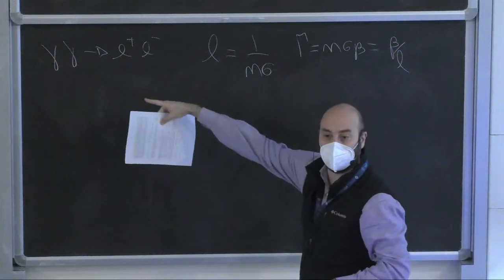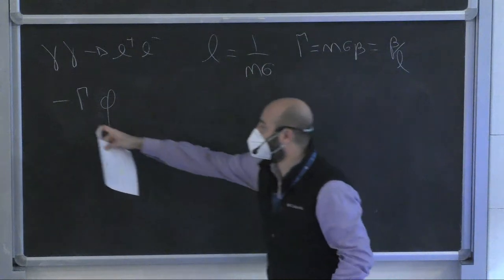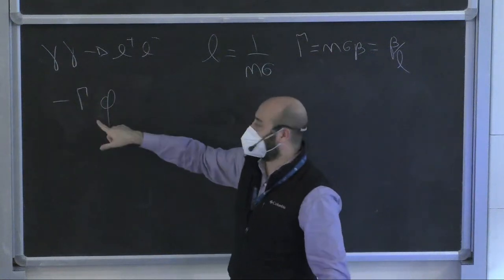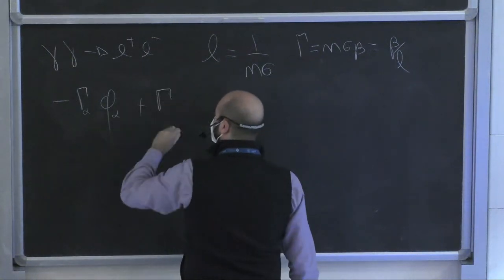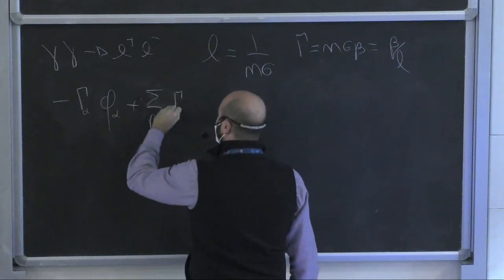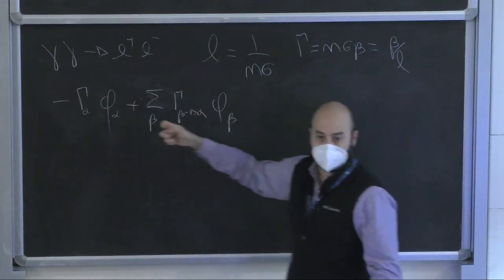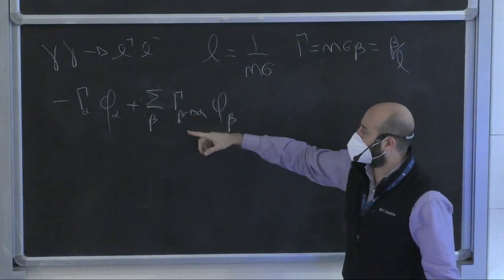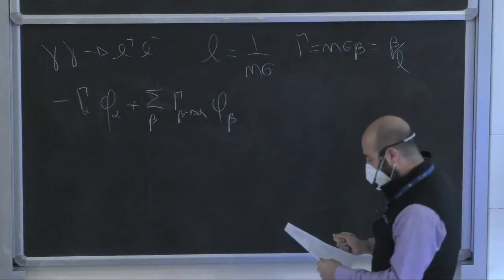For such catastrophic processes, at the right-hand side you introduce minus Gamma times phi. In principle this is the rate of all possible processes that deplete your cosmic ray beam. If you have a process like gamma gamma to e+ e-, it is a sink for photons and a source for electrons and positrons. So you also have a source term: sum over beta of Gamma(beta to alpha) times phi(beta). There are also processes not of this catastrophic form.